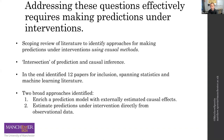Addressing these questions effectively requires making predictions under interventions — we can't just use historical data and predict based on what happened there if we're interested in these kinds of questions. Making predictions under intervention in a predictive modelling context is a fairly new idea. We carried out a scoping review of the literature to identify where people have explicitly done this — explicitly enriching prediction models with causal techniques in order to be able to predict under intervention.